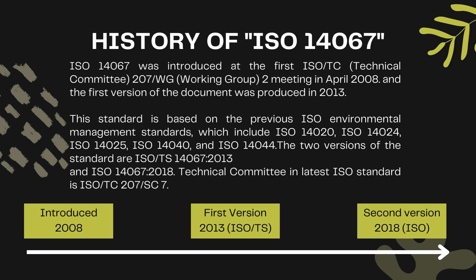History of ISO 14067. ISO 14067 was introduced at the first ISO-TC (technical committee) 207-WG (working group) two meeting in April 2008, and the first version of the document was produced in 2013. This standard is based on the previous ISO environmental management standards, which include ISO 14020, ISO 14024, ISO 14025, ISO 14040, and ISO 14044. The two versions of the standard are ISO-TS 14067:2013 and ISO 14067:2018. The technical committee and latest ISO standard is ISO-TC 207-SC 7.